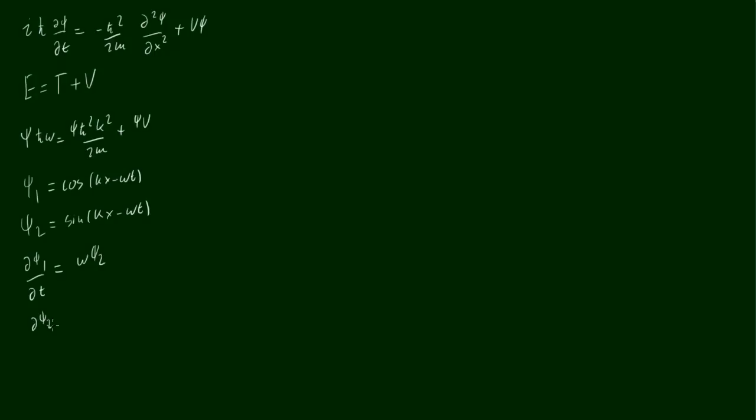dψ₂/dt was minus ωψ₁. And differentiating with respect to space twice, we get minus k²ψ₁. Well, this is 1 or 2. So I'll just save some space by writing 1, 2. So this is everything that we needed from last time.